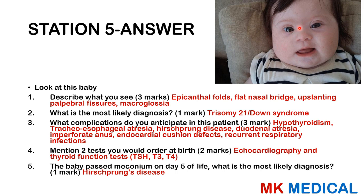This baby has epicanthal folds, a flat nose bridge, upslanting palpebral fissures, and macroglossia — consistent with trisomy 21 or Down syndrome. Anticipated complications include hypothyroidism, tracheoesophageal atresia, Hirschsprung's disease, duodenal atresia, imperforate anus, endocardial cushion defects, and recurrent respiratory infections. At birth, order an echocardiogram and thyroid function tests (TSH, T3, T4). Delayed passage of meconium is likely due to Hirschsprung's disease, where ganglion cells fail to migrate to the distal colon.